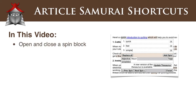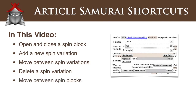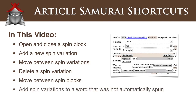Specifically, we'll look at how to open and close a spin block, add a new spin variation, move between spin variations, delete a spin variation, move between spin blocks, add spin variations to a word that was not automatically spun, and remove a spin block entirely.